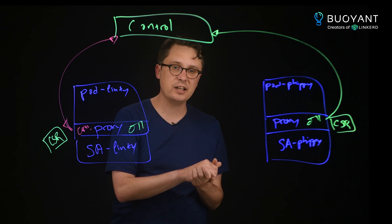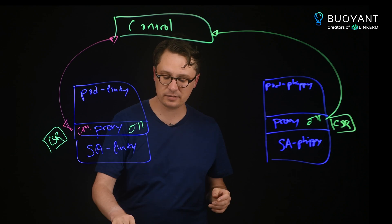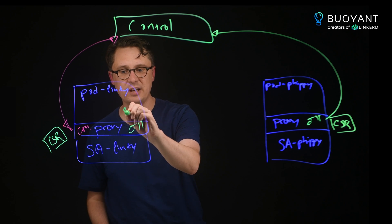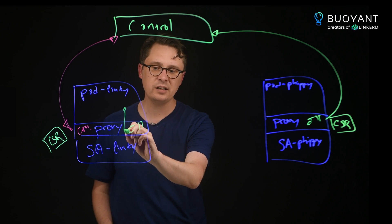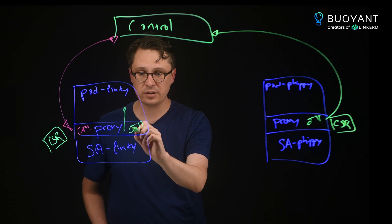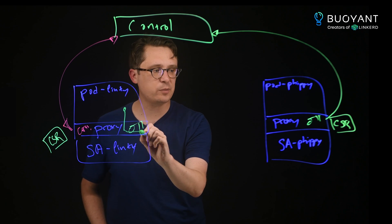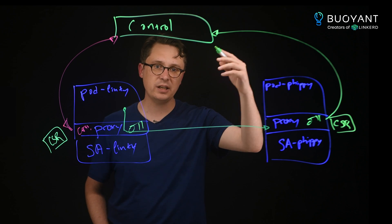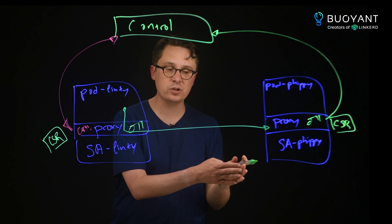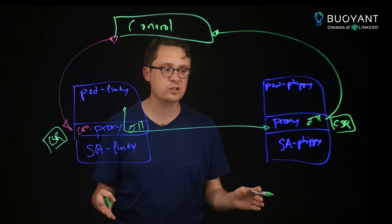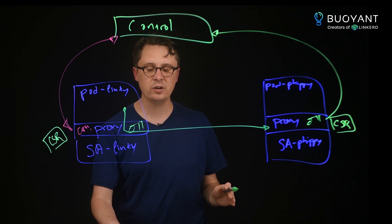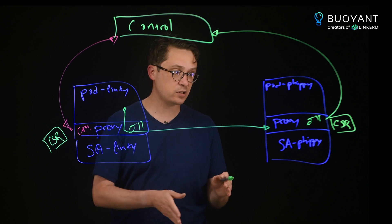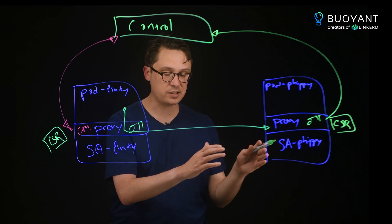As Linky tries to connect to the IP address of FIPI, it goes through the proxy because of IP tables configured here. We start to connect and we use the control plane to give us information — if we're talking to a service, we get all the individual pods in that service and their service accounts. Or if we're talking directly to the pod, we skip the service and just get the service account for that single pod.